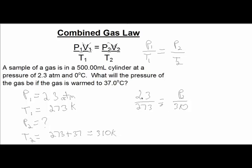Cross multiplying, 2.3 times 310 is 713, and 273 times P₂ is the other cross multiplication. So 310 times 2.3 is 713, and P₂ times 273 is 273P₂. Dividing both sides by 273, you'll get P₂, our new pressure, is 2.61 atmospheres.